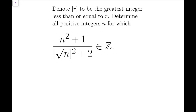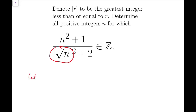This is an approachable problem, because to me the only obstacle to simplifying the given expression is to rewrite this part — the floor function of the square root of n. So the most straightforward way to do this is to simply let m equal the floor function of square root of n, and then let a equal n minus m squared.